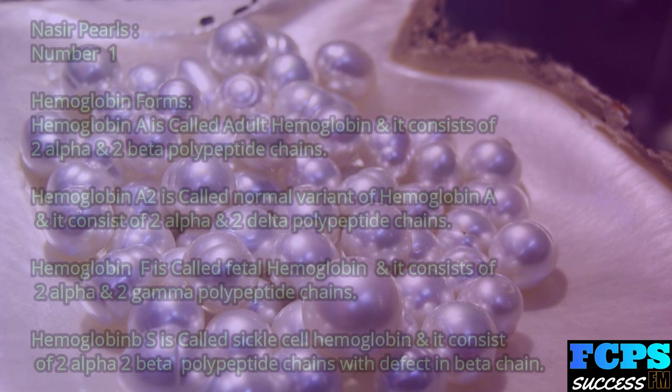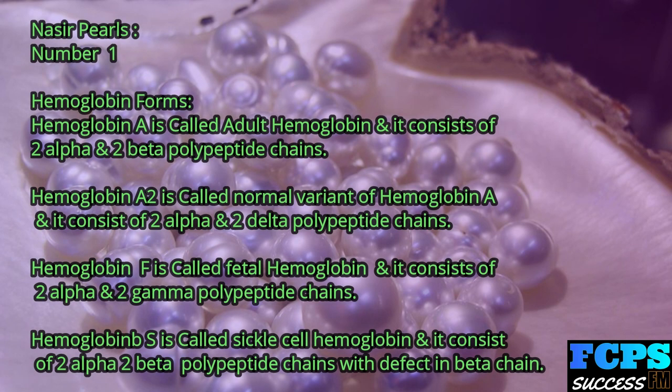Nasir Pearl number 1: Hemoglobin forms. Hemoglobin A is called adult hemoglobin and consists of two alpha and two beta polypeptide chains. Hemoglobin A2 is a normal variant consisting of two alpha and two delta chains. Hemoglobin F is fetal hemoglobin with two alpha and two gamma chains. Hemoglobin S is sickle cell hemoglobin with two alpha and two beta chains, with a defect in the beta chain.